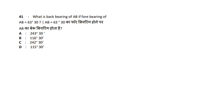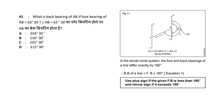First question: what is the back bearing of AB if the fore bearing of AB is equal to 63 degrees 30 minutes? We call the back bearing — the bearing taken along a line in the reverse direction. The important equation is: back bearing of a line is equal to fore bearing plus or minus 180 degrees.